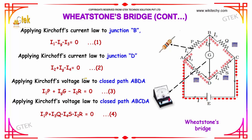Applying Kirchhoff's voltage law to the closed path A-B-D-A: I1 into P is in the clockwise direction, IG into G is added because it's also in the clockwise direction, and I2 into R is in the anticlockwise direction. So I1P plus IG·G minus I2R is equal to 0.